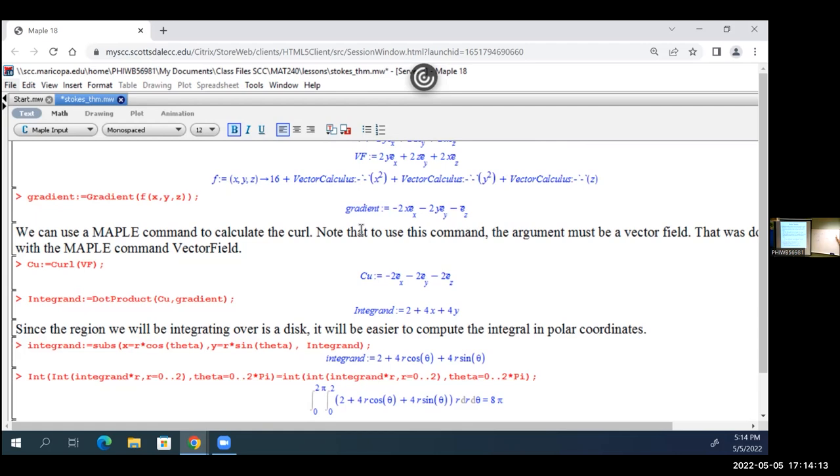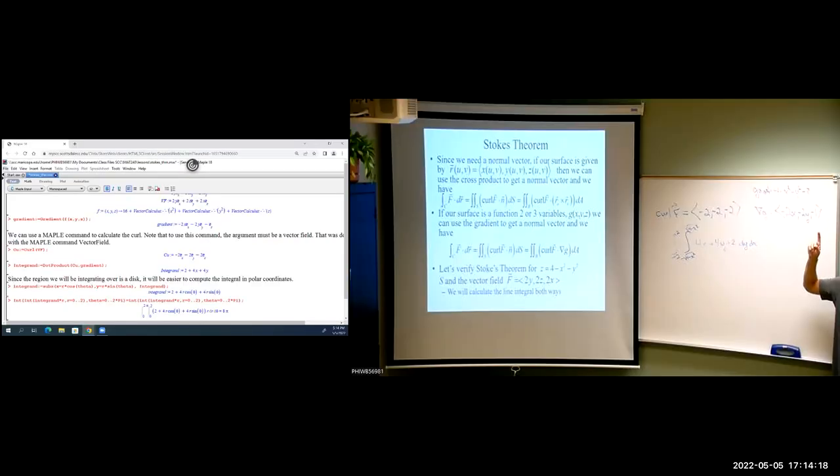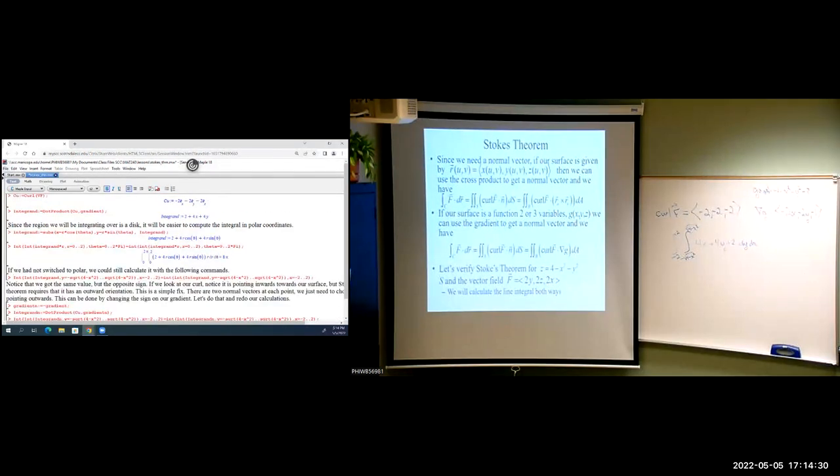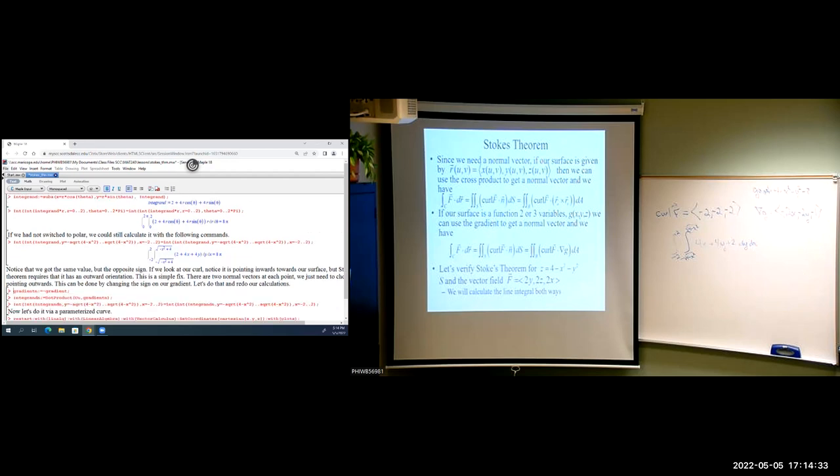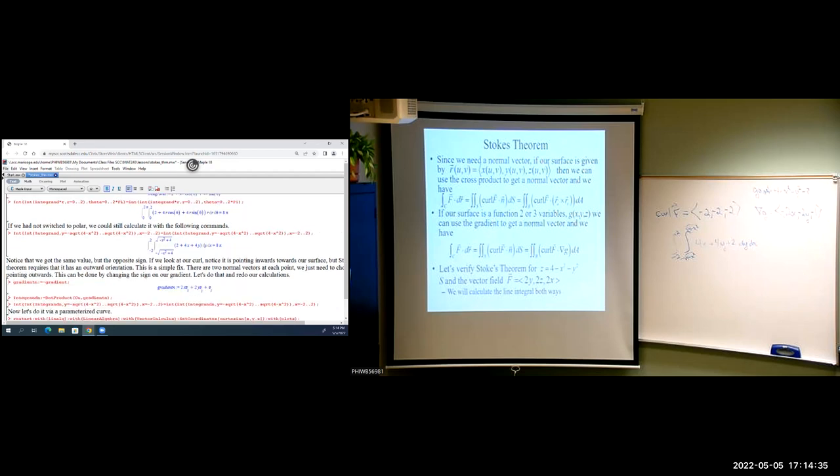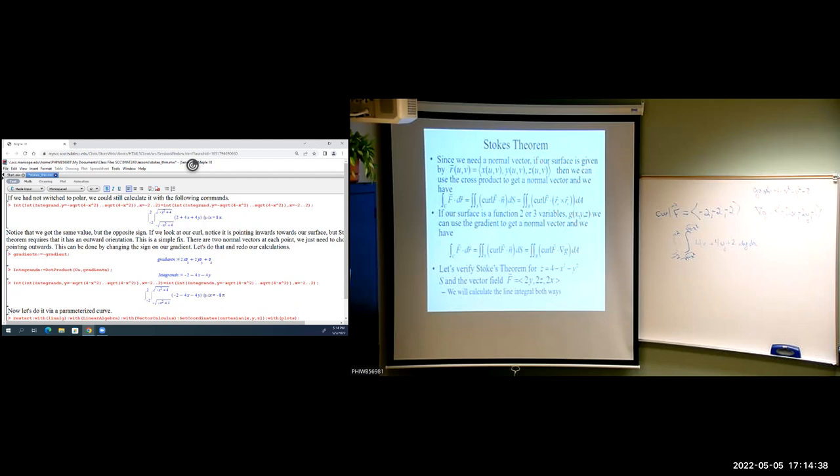Stokes theorem requires that the normal vector be pointing outwards. So, let's go back to our normal vector. Our normal vector came from the gradient. Well, right off the bat, we can see we picked the one pointing downwards. We would want the one pointing upwards, if it's going to be outward up this surface. Is that a big deal? No, it just means the answer is going to have the opposite sign. That's the only thing it means. It's a real easy fix. So, that's all we got to do here. We change the gradient. And now, there's our negative 8 pi. And so, that is how we would do it in rectangular coordinates.